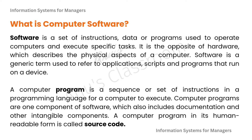So what exactly is a computer software? Software is a word used to refer to a set of instructions, data or programs that are used to operate computers and execute specific tasks. It is the opposite of hardware, which describes the physical aspects of a computer like the mouse, keyboard, printer, and monitor. Software is a generic term which can refer to applications, scripts and programs which run on a computer device.